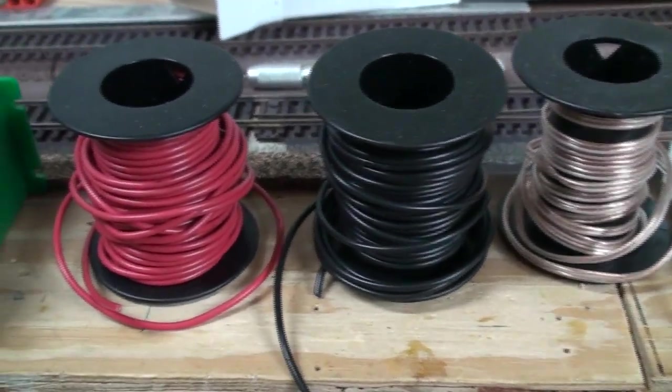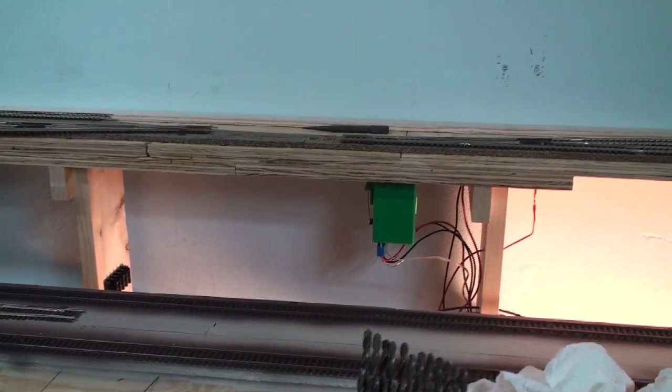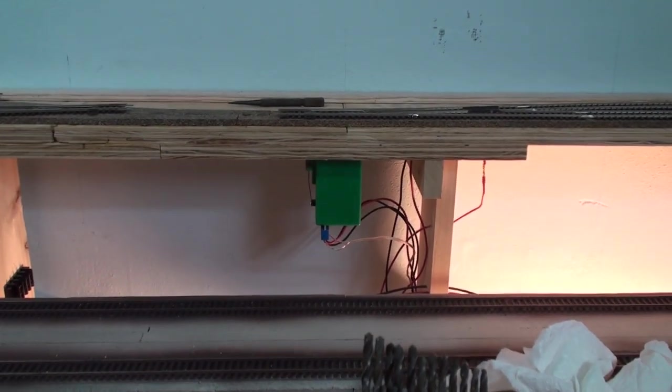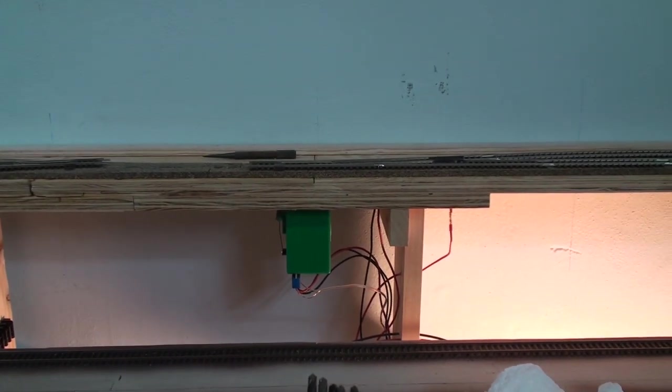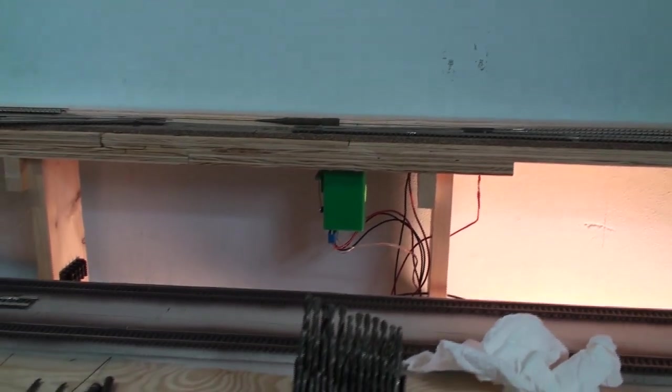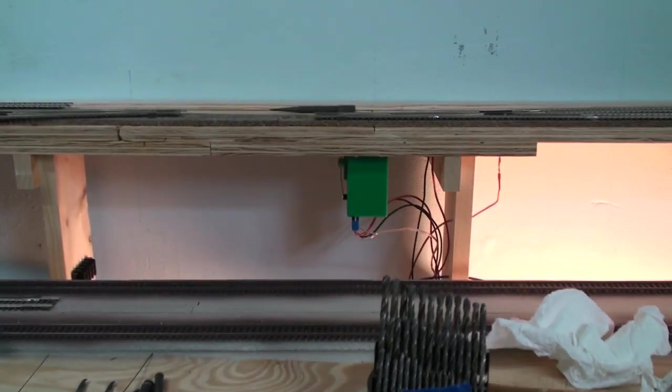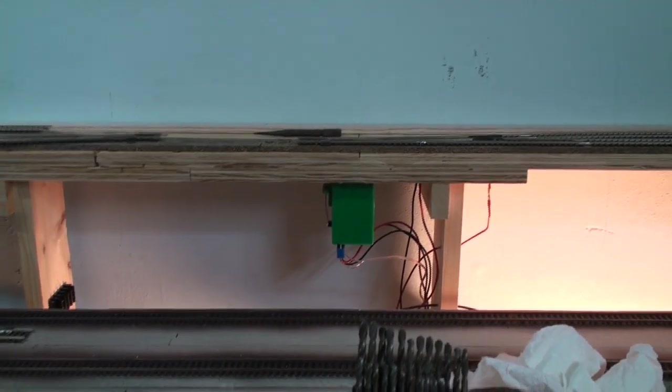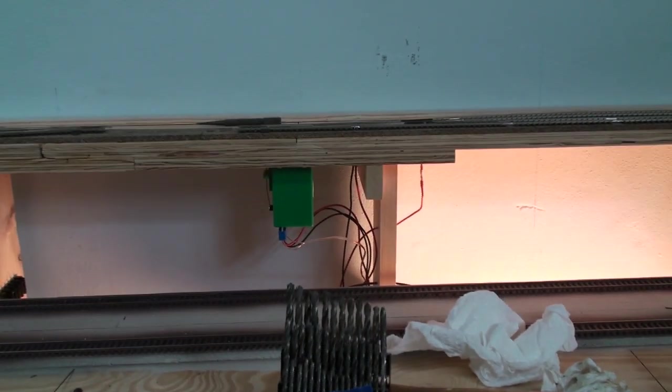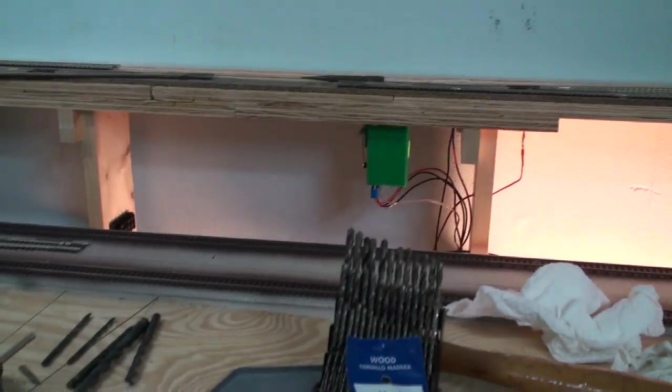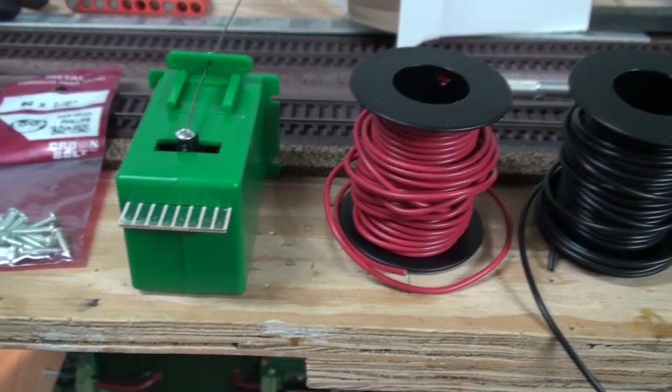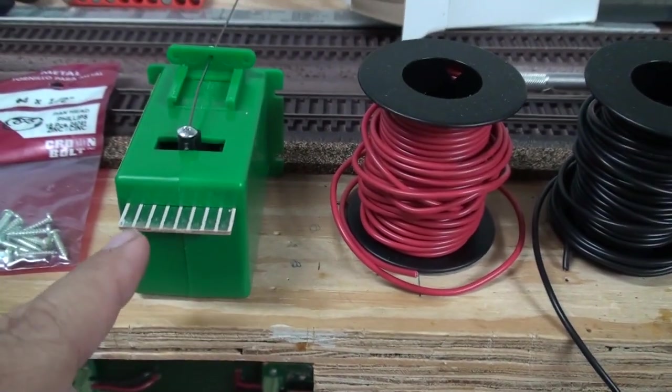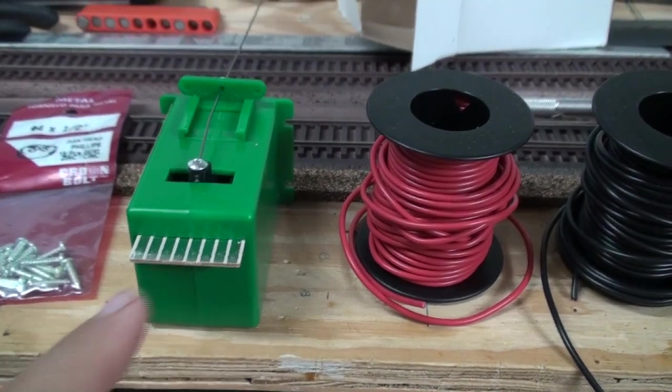The reason I use 18 gauge is if you ever have a short, you don't want the wire to burn out before it sets the trip on your circuit breaker. So try to use the heaviest wire possible that you can for feeders. If you are using 22 gauge for feeders, that's fine. I would just like to go a little heavier with 18 gauge right into the switch motor and then out from the switch motor to the frog.